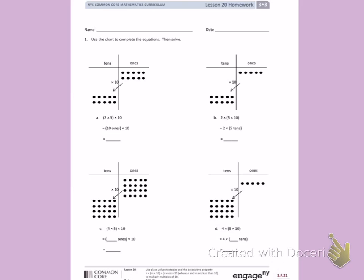Number 1. Use the chart to complete the equations, then solve. Letter A. I see that there are two rows of 5 that have been moved from the ones place to the tens place,